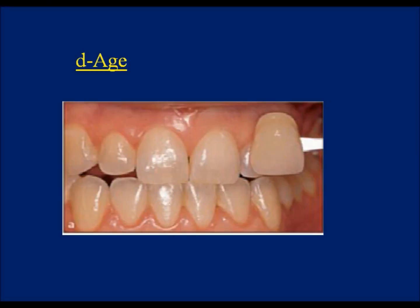D. Age. In old-age teeth, certain problems occur such as physiological dentine apposition, thinning and cracking of enamel, and incisor wear. These problems increase the color of the tooth, which can be treated by bleaching.